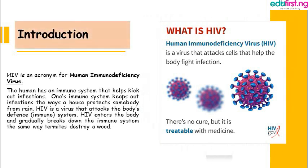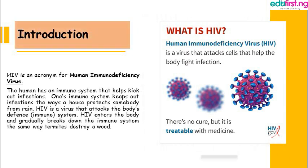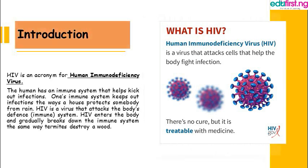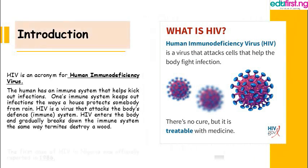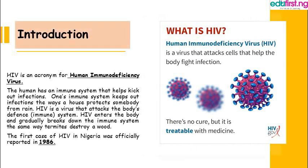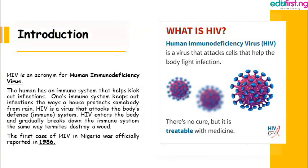HIV is a virus that attacks the body's defense immune system. HIV enters the body and gradually breaks down the immune system the same way a termite destroys wood. The first case of HIV in Nigeria was officially reported in 1986.